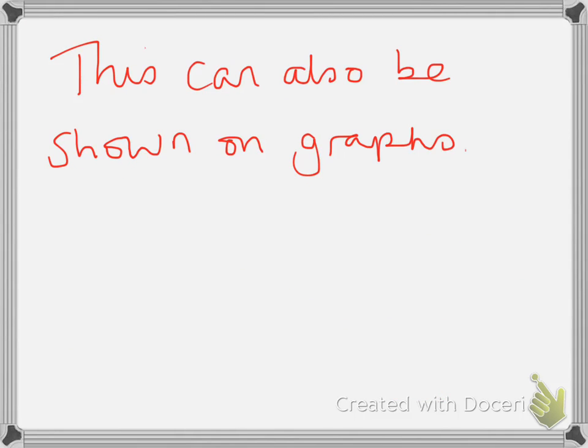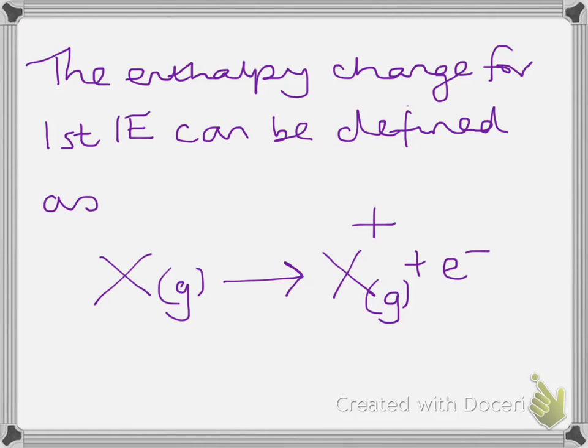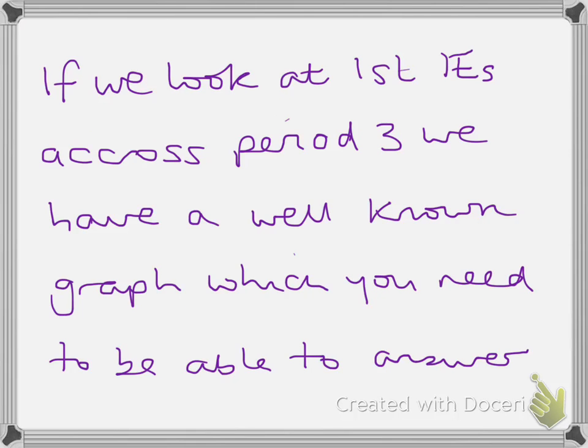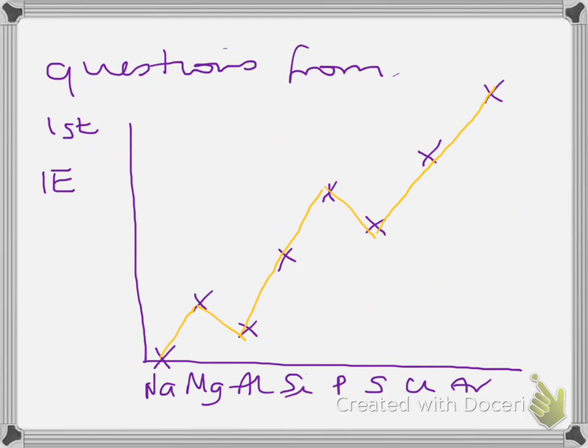This can also be shown on graphs so if you get used to working it out from graphs as well. The enthalpy change for first ionization energy as we said before can be defined as 1 mole of electrons removed from 1 mole of gaseous atoms to form 1 mole of unipositive ions. It's really important in these to put the state symbols. If we look at just the first ionization energies across period 3 we have a well-known graph which you will need to be able to answer questions on.